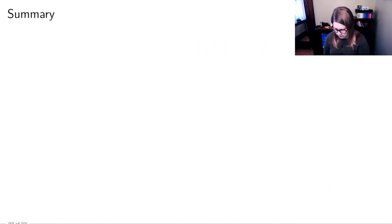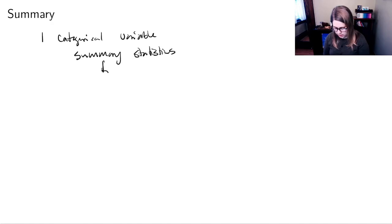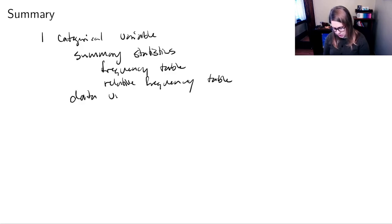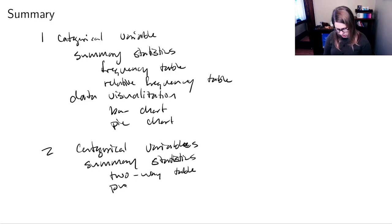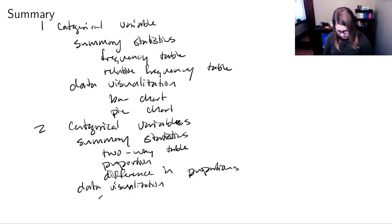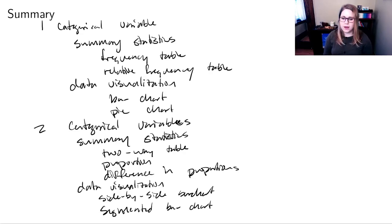Let's do a quick summary. For one categorical variable, we have summary statistics — a frequency table and a relative frequency table — and data visualizations like a bar chart or pie chart. For two categorical variables, we have a two-way table, a proportion, or a difference in proportions, along with a side-by-side bar chart or segmented bar chart. We'll do this same kind of exploratory data analysis for every type of variable we encounter in this course.